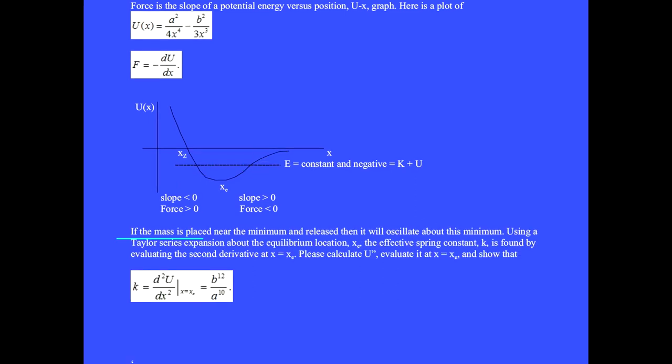If the mass is placed near the minimum and released, then it will oscillate about this minimum. Using a Taylor series expansion about the equilibrium location xe, the effective spring constant k is found by evaluating the second derivative at x equal xe. Please calculate U double prime, evaluate it at x equal xe, and show that k equals b to the twelfth over a to the tenth.